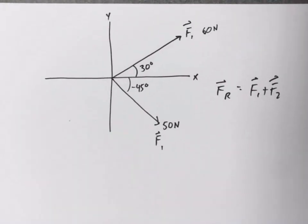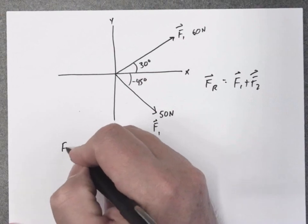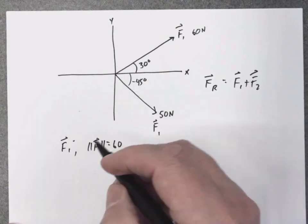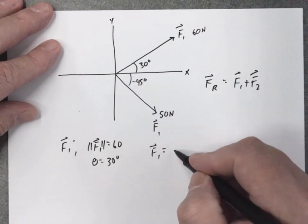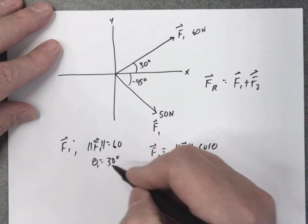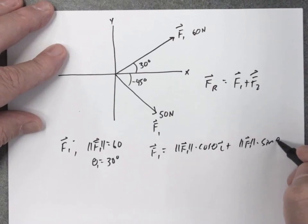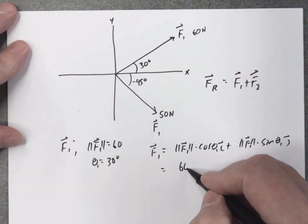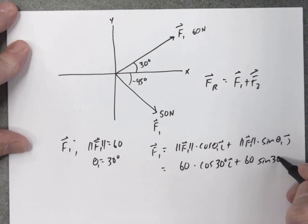So first we can look at F1. F1, the magnitude is 60, the angle is 30 degrees. So to convert that into IJ, we take the magnitude times the cosine of the angle, we'll call this angle 1. That's the I part, and then we take the magnitude again, multiply it by the sine of the angle. So that's the J part. So let's just do that. The magnitude is 60, cosine of 30 degrees, plus 60, sine of 30 degrees, J.